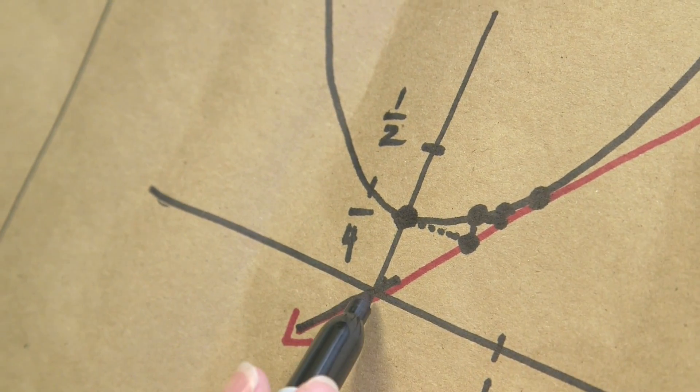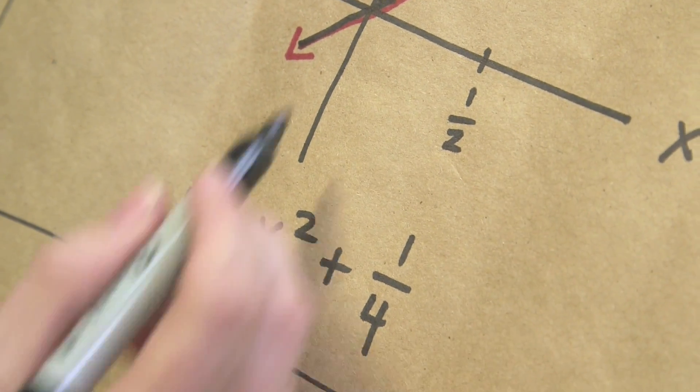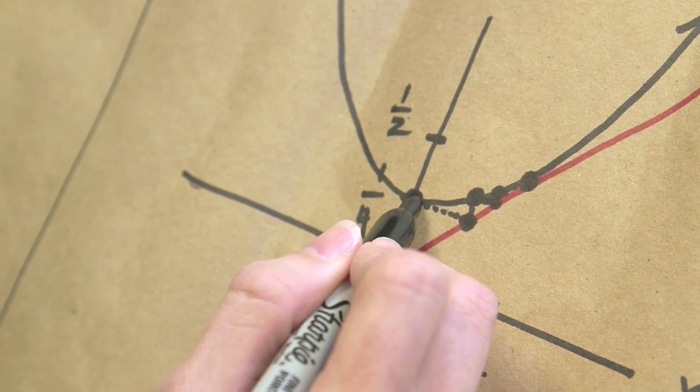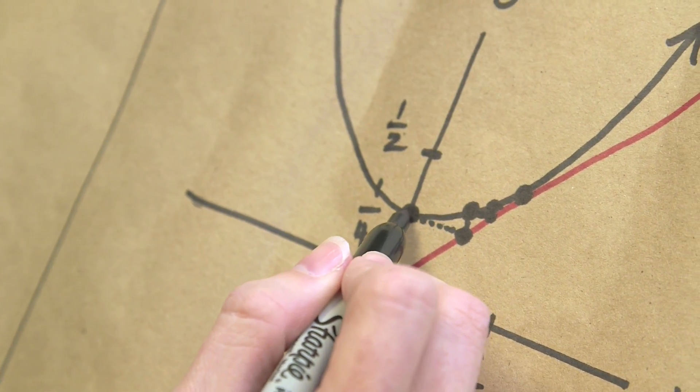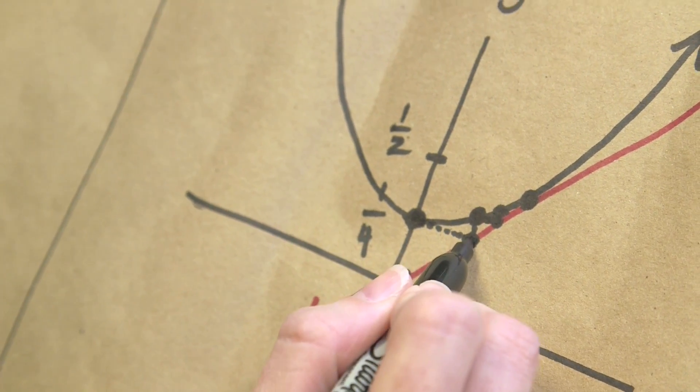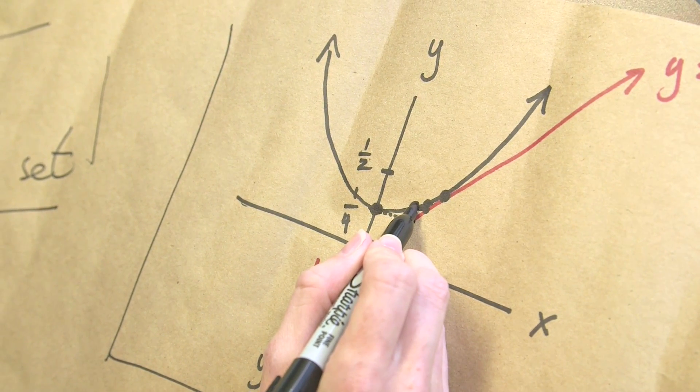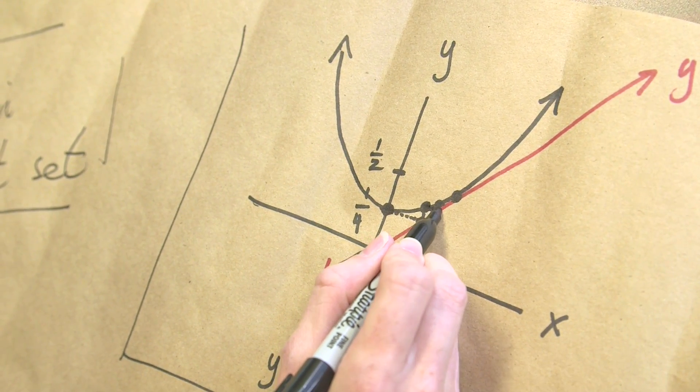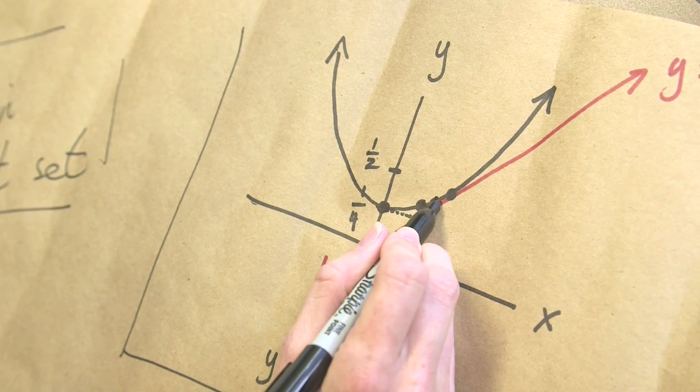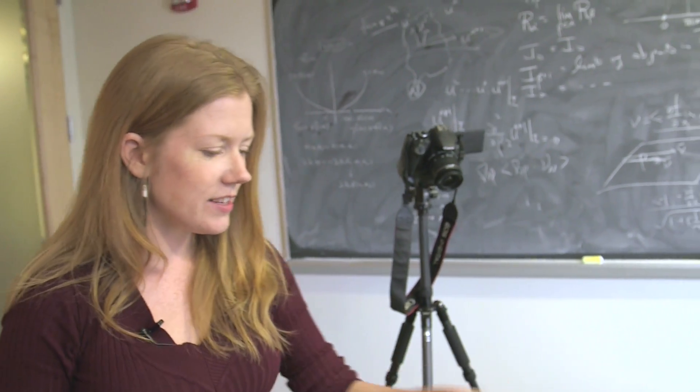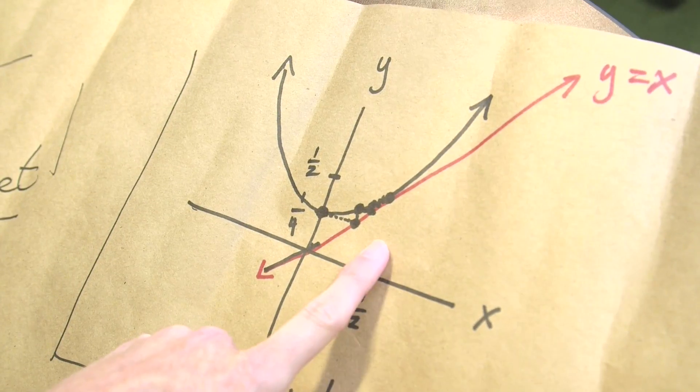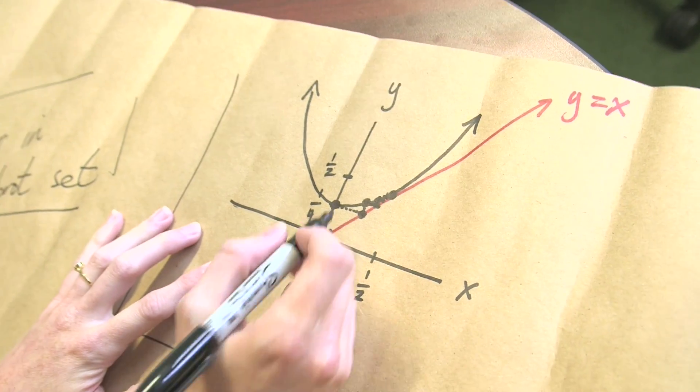So you start at x equals zero and when you plug in zero here you get y equals one-fourth, which is this point. And now if we want to iterate, what that means is we're replacing x with y. So we travel over here to replace x with y on the line y equals x, and then we evaluate the function there, which means we travel vertically until we hit the curve. And then we repeat this process, so travel horizontally until you hit the line, travel vertically until you hit the curve, and so on, like a little staircase.